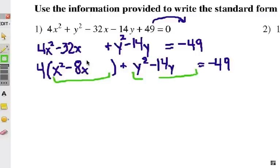In this first trinomial, I need to complete the square. I'm going to take half of negative 8, which is negative 4, but I have to square that, which would be positive 16. With the y group, I take half of negative 14, which is negative 7, and I square that, positive 49.